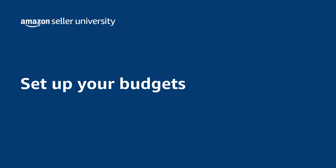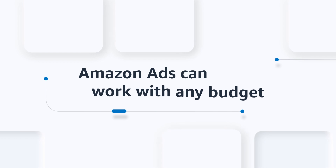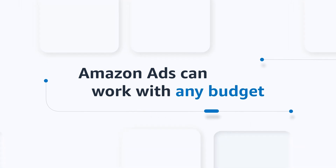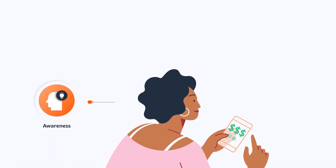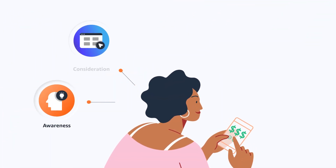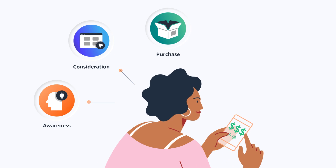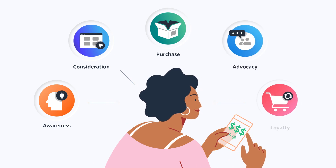In this video, we'll help you choose the best budgeting strategy for your Amazon Ads campaigns and show you how to set up your budgets in the Advertising Console. Remember that Amazon Ads can work with any budget. Your campaign budget determines how much you will spend on sponsored ads. Setting a sufficient budget based on your objectives will help you get the most out of your campaign over a set period of time.